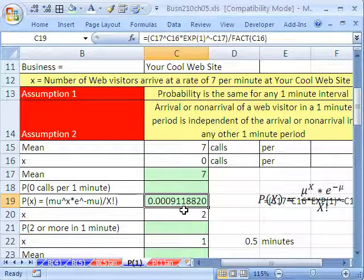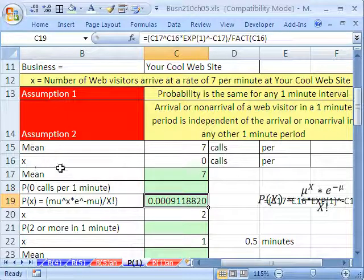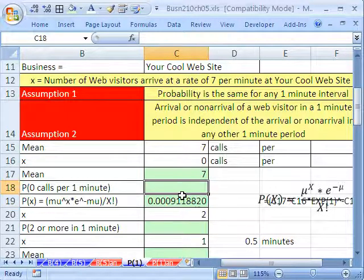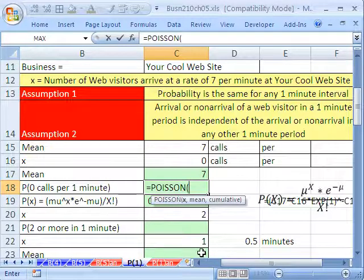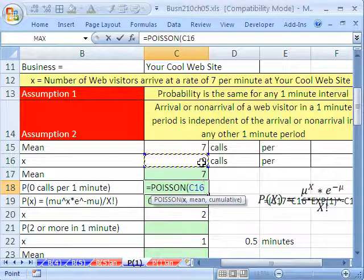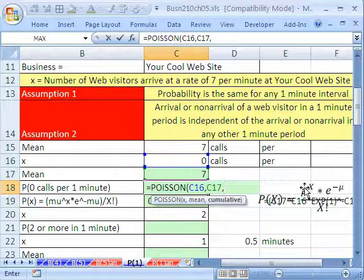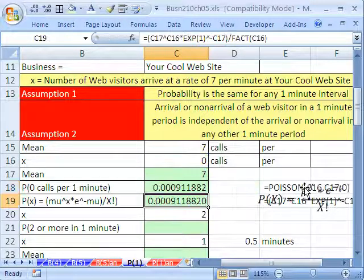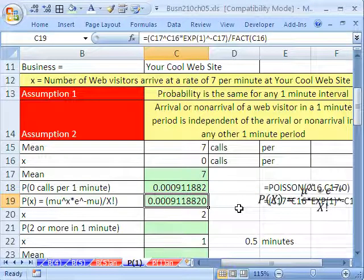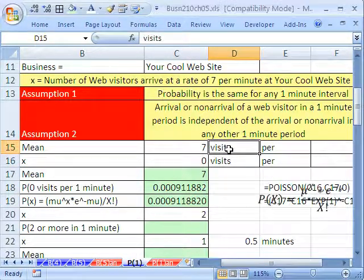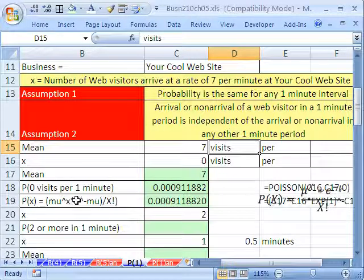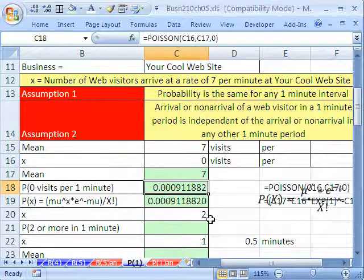So there is our probability. And of course, it is very small, probability of 0 calls in one minute. Now, let's just do it the easy way, the Poisson function. We need our x, comma, our mu, comma, and our 0. And there it is, very low probability of getting 0 calls or 0, not calls. That should be visits right there, calls per one minute at your website. No, visits. So 0 visits in one minute, very low.